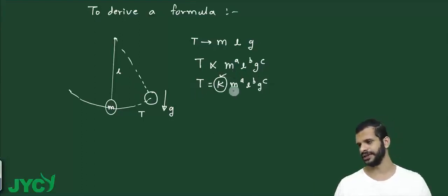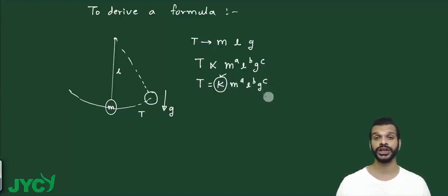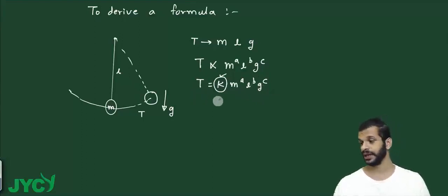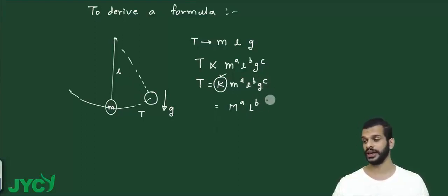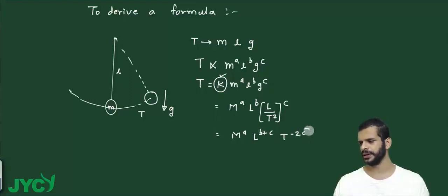Now we will apply the principle of homogeneity. The left-hand side is time period T, so the right-hand side must also have dimensions of time. Writing the dimensional formulas: left-hand side gives T to the power 1. Right-hand side: mass is M to the power a, length is L to the power b, and acceleration due to gravity g is L T⁻², so g to the power c gives L^c T^(−2c). Combined: M^a · L^(b+c) · T^(−2c).